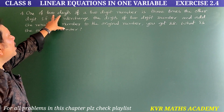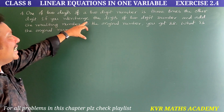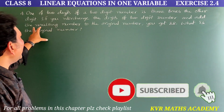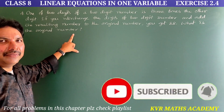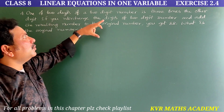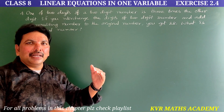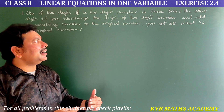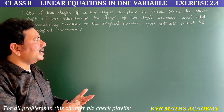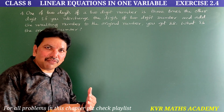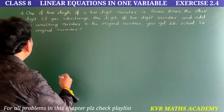Fourth question. One of the two digits of a two-digit number is three times the other digit. If you interchange the digits and add the resulting number to the original number, you get 88. What is the original number? Let us find the solution.